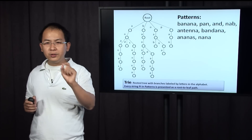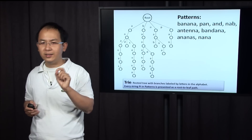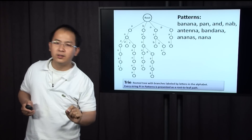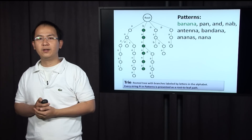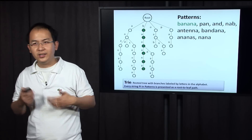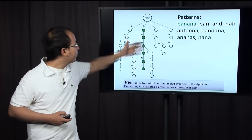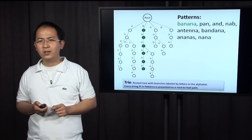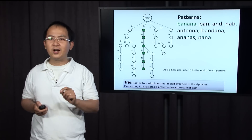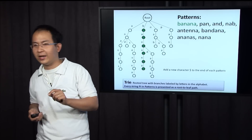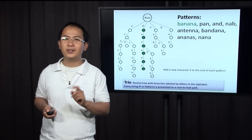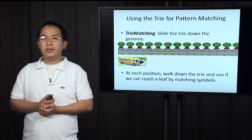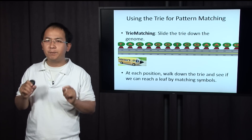Note that in this example there are some errors — if you want to construct a trie yourself, you need to add a dollar character at the end of each pattern. Now, the question is how to use the trie for pattern matching. Before, Philip had to move each individual pattern one at a time along the genome to find matches.